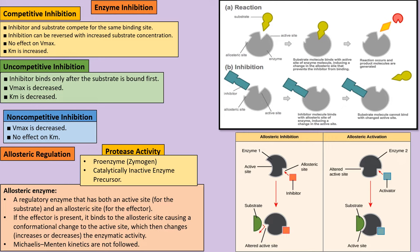This is called allosteric regulation. If the allosteric regulator is not present, the reaction proceeds normally with the substrate and enzyme at the active site. An important point: the Michaelis-Menten equation is not followed in allosteric regulation.